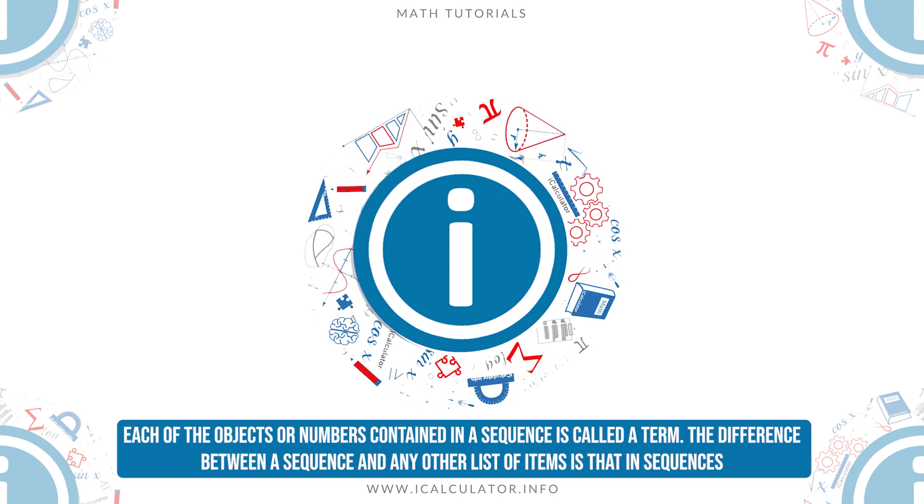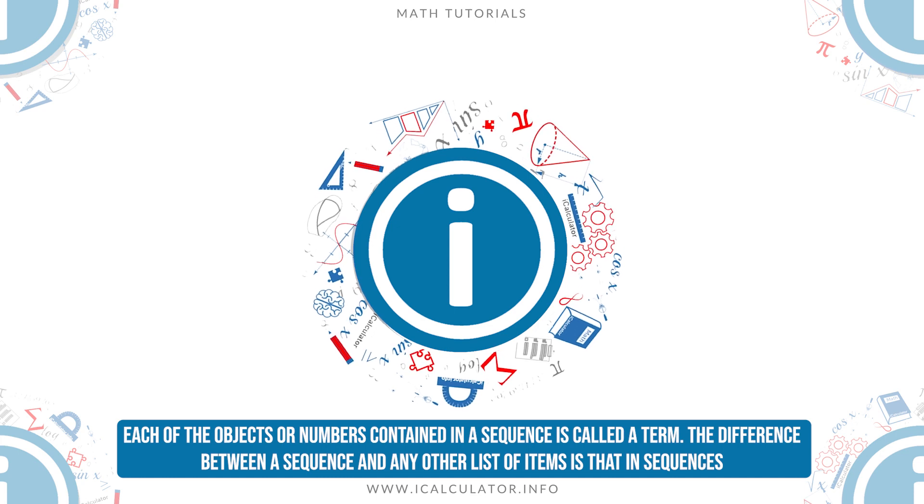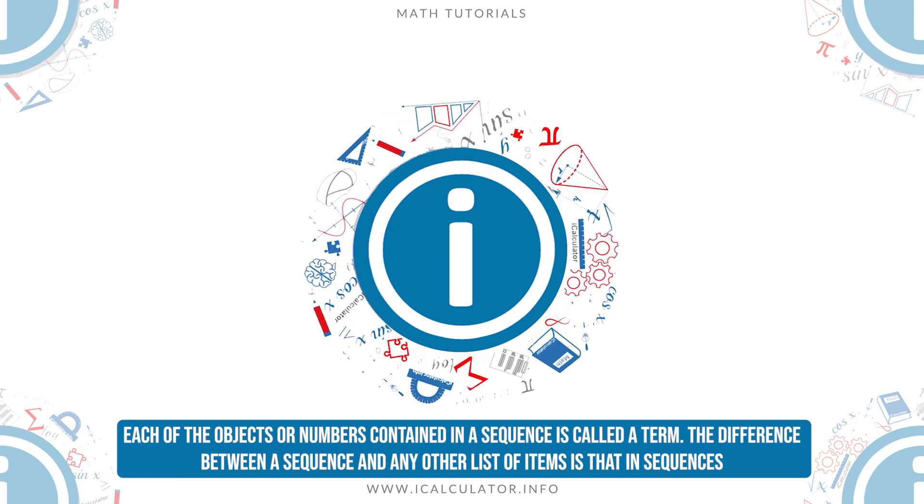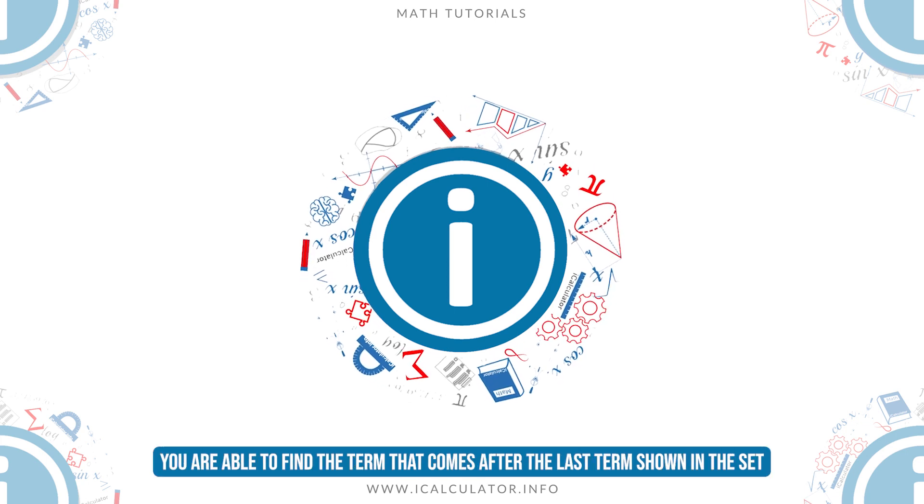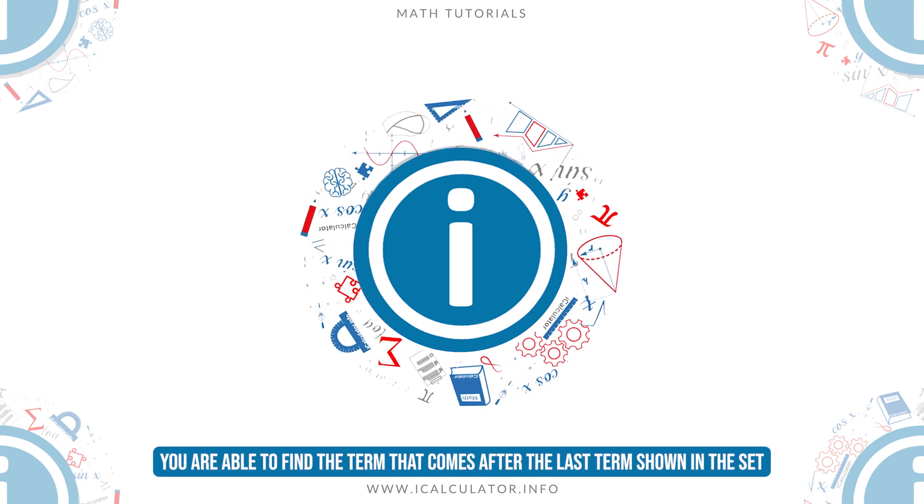Each of the objects or numbers contained in a sequence is called a term. The difference between a sequence and any other list of items is that in sequences, you are able to find the term that comes after the last term shown in the set.